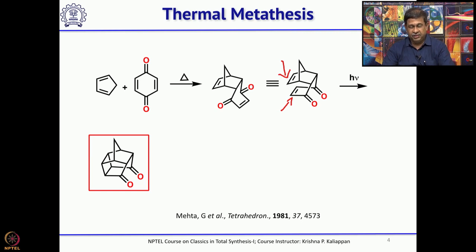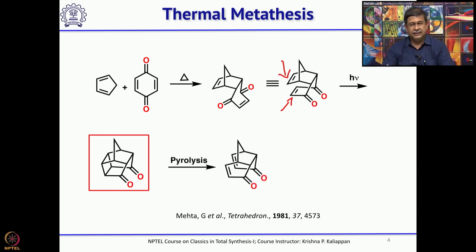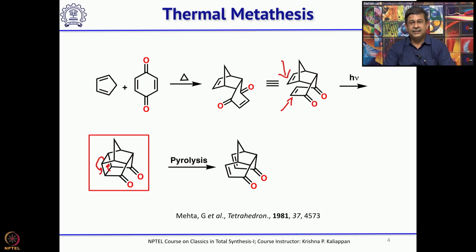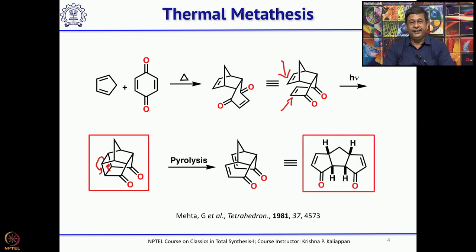This was reported by Cooke, so it is called Cooke's dione. What is important is that Mehta's group used Cooke's dione for a very important transformation called thermal metathesis. Upon flash vacuum pyrolysis at 600 degrees, it undergoes a retro [2+2], and you get a tricyclic dienedione. Clearly, from cyclopentadiene and benzoquinone, one can get this linear triquinane core structure in just 3 steps.